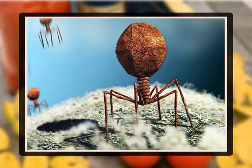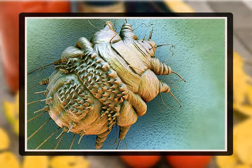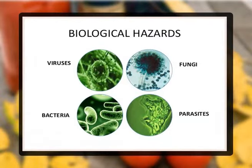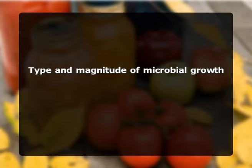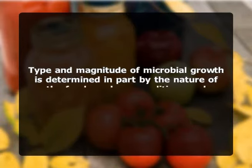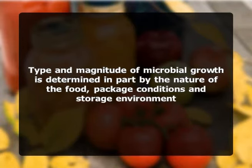First, we'll start with biological hazards. Biological hazards occur when hazardous or pathogenic organisms are introduced into the food and thus pose a food safety concern to the consumers. Biological hazards include bacteria, viruses, and parasites of public health significance. They can be introduced from the environment, such as soil bacteria and agricultural runoff, or from inadequate sanitation practices and cross-contamination during transportation, handling, processing, and storage. The type and magnitude of microbial growth is determined in part by the nature of food, package conditions, and storage environment.